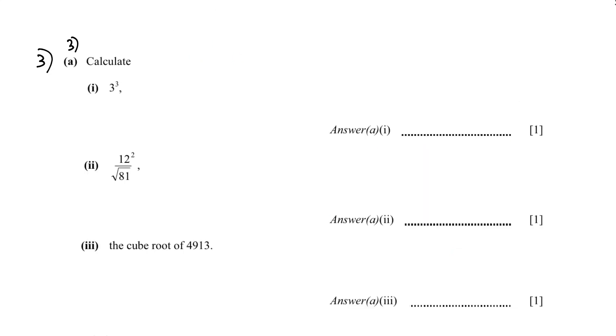Question number 3. Calculate 3 cube. You just have to put in the calculator and you will get the answer as 27. In A2 you have 12 square divided by square root 81. The answer is 16. The cube root of 4913. In the calculator you can write it as cube root of 4913 or 4913 to the power of 1 over 3. The answer is 17.